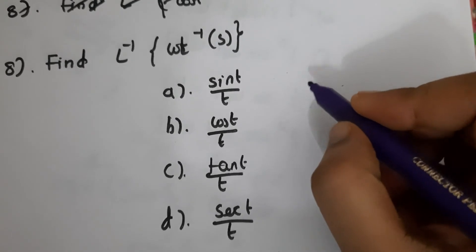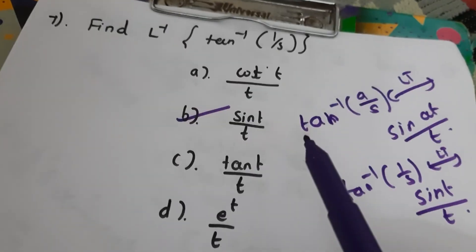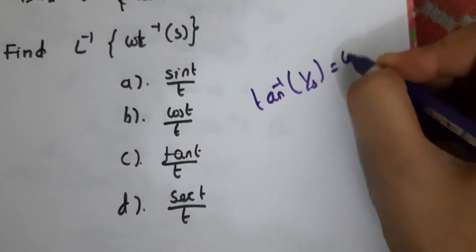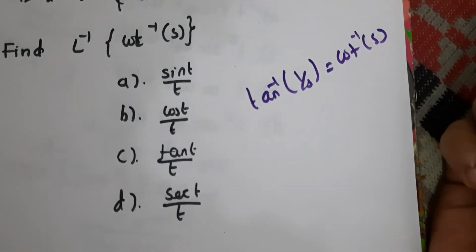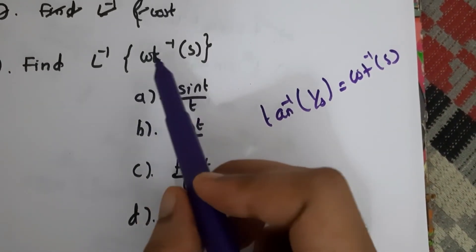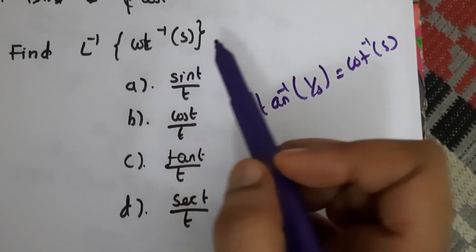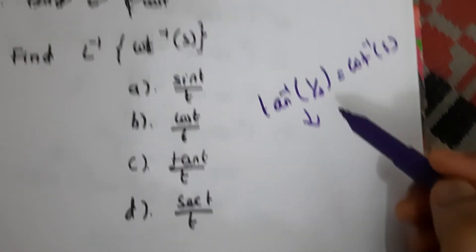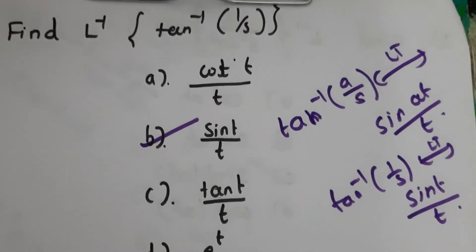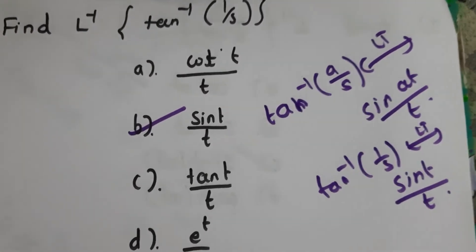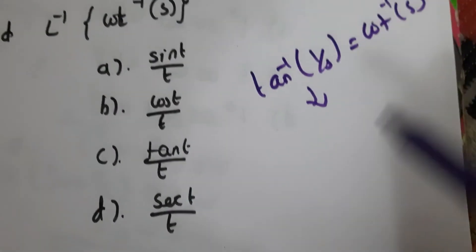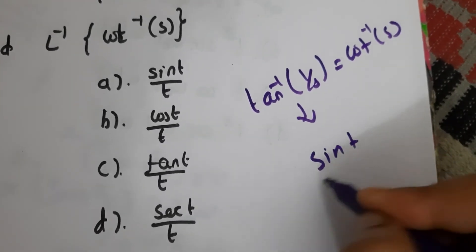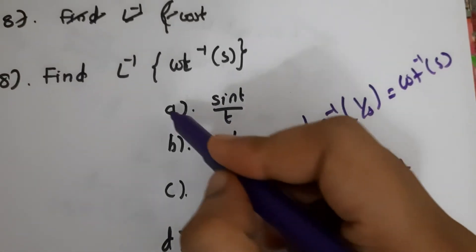Eighth question: find the inverse Laplace transform of cot⁻¹(s). Note that cot⁻¹(s) equals tan⁻¹(1/s). We already solved this — the inverse Laplace transform of tan⁻¹(1/s) is sin(t)/t. So the inverse Laplace of cot⁻¹(s) is also sin(t)/t. The answer is A.